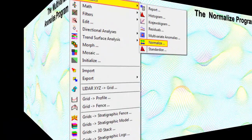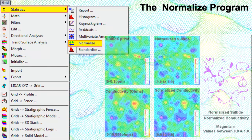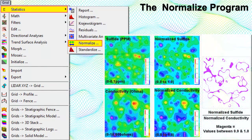The Normalize program recomputes the grid node values such that they range between a user-specified minimum and maximum. This filter is useful when looking for relationships between models that are expressed in different units. In this example, we have divided normalized geochemistry by normalized conductivity and highlighted areas where the two data sets correlate.